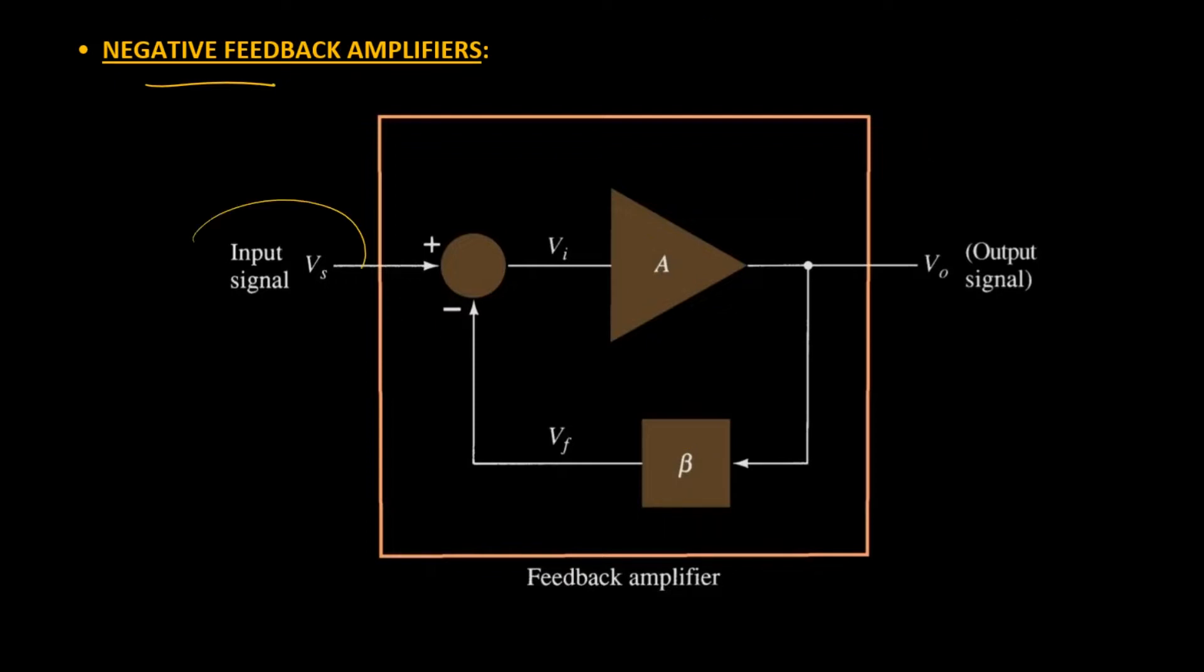We can see that the input signal Vs is being added in the mixer with a minus Vf signal, which results in Vi as the output. This Vi will act as input to amplifier with gain A, and its output will be V0. Mostly in feedback networks, a fraction or portion of V0 is being fed back through an amplifier beta, which is again getting mixed up or subtracted from the signal Vs. There are four different negative feedback connection types which we'll be studying shortly, but before moving to the connections, we must know a few advantages of negative feedback.